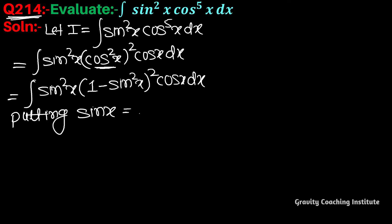Equal to t. Now differentiate with respect to t. So therefore I equal to integration t² into (1-t²)² and cosx dx becomes dt.